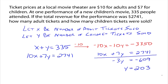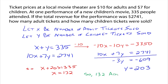So what does that mean? That means 203 children's tickets were sold. Now we need to figure out the number of adult tickets. We'll take 203, plug it in for Y: X plus 203 equals 335, so X equals 132.